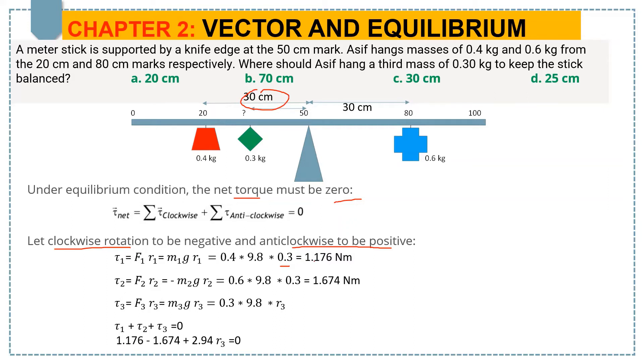After calculation, we get 1.176 newton-meters. Next, to calculate the torque due to 0.6 kg, you see I have a minus here, and that is supposed to equal 1.674 newton-meters.